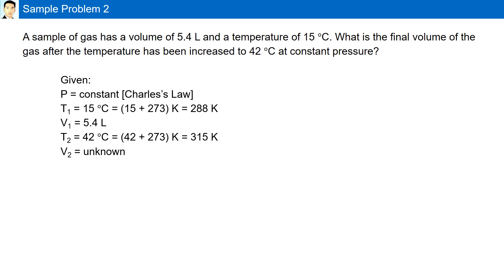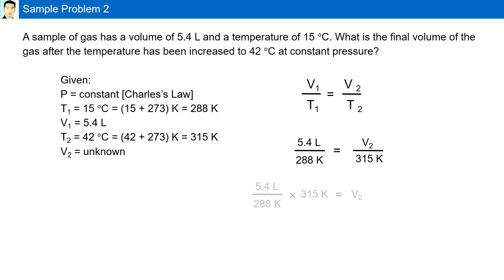The second volume is unknown. Using Charles' law formula, V1 over T1 is equal to V2 over T2. Plugging in our formula, we have our final volume as 5.9 liters.